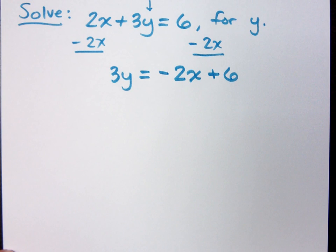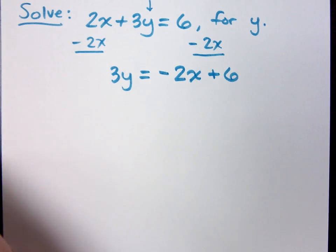Now, what do I do? How do I finish getting y completely isolated? By 3. Divide by 3. Do you all agree?